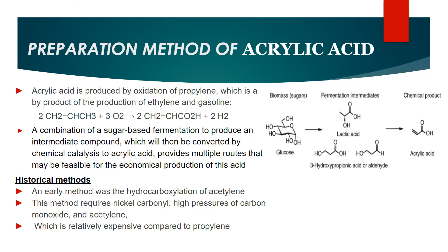In this picture, you can see that a combination of sugar-based glucose is first converted into an intermediate compound by the process of fermentation, and then converted using a chemical catalyst to acrylic acid, which produces multiple routes that may be feasible for the economical production of this acid.